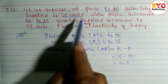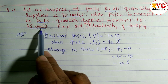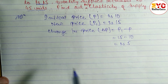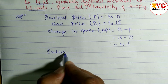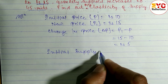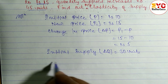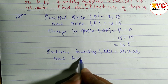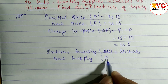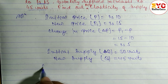When price is rupees 10, initial supply is 30 units. When price increases to rupees 15, quantity supplied increases to 45 units. So initial supply q is equal to 30 units, and new supply q1 is equal to 45 units.